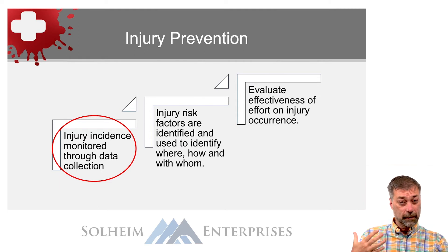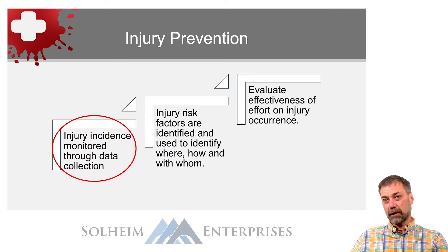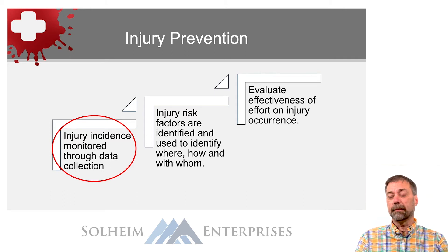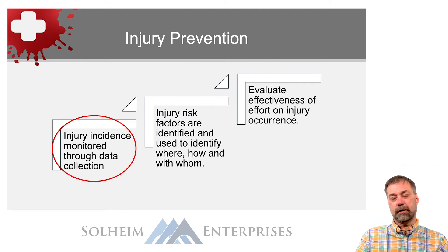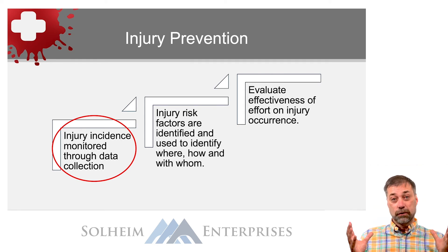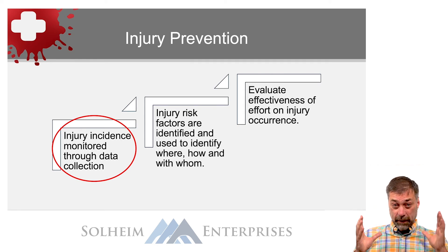You're going to want to pick an injury that's common in your community, or if it's not common, one that's costly or likely preventable. All kinds of factors have to be looked at when determining what type of injury prevention program to do. So that first step is injury incidents monitored through data collection to determine where the injuries occur and how you can impact them.